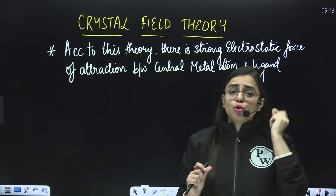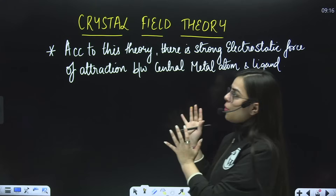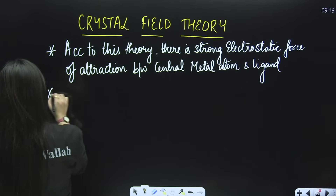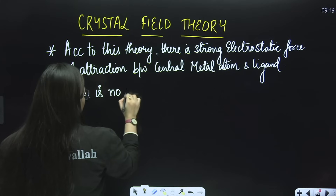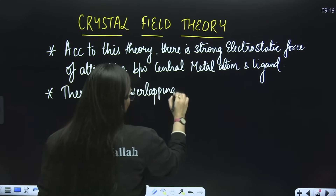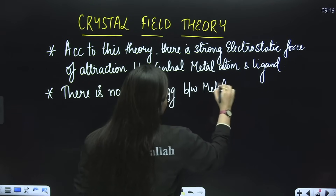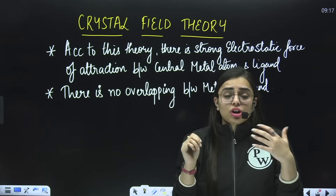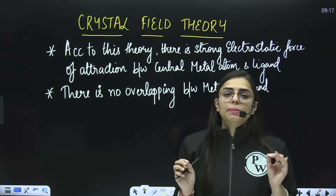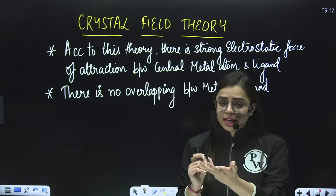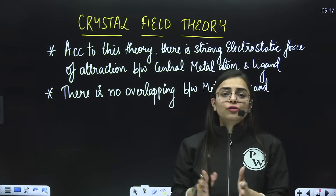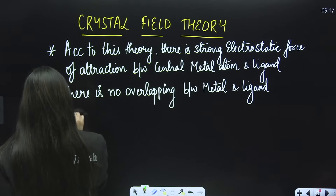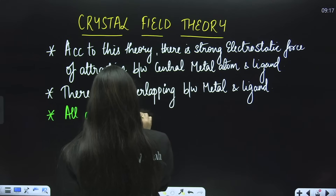So these are the basic things we need to know regarding Crystal Field Theory. The next important key point is that there is no overlapping between the metal atom and the ligand. Also, all orbitals in the D sub-shell — dxy, dyz, dxz, dx²y², and dz² — basically have the same energy. All d orbitals are degenerate.